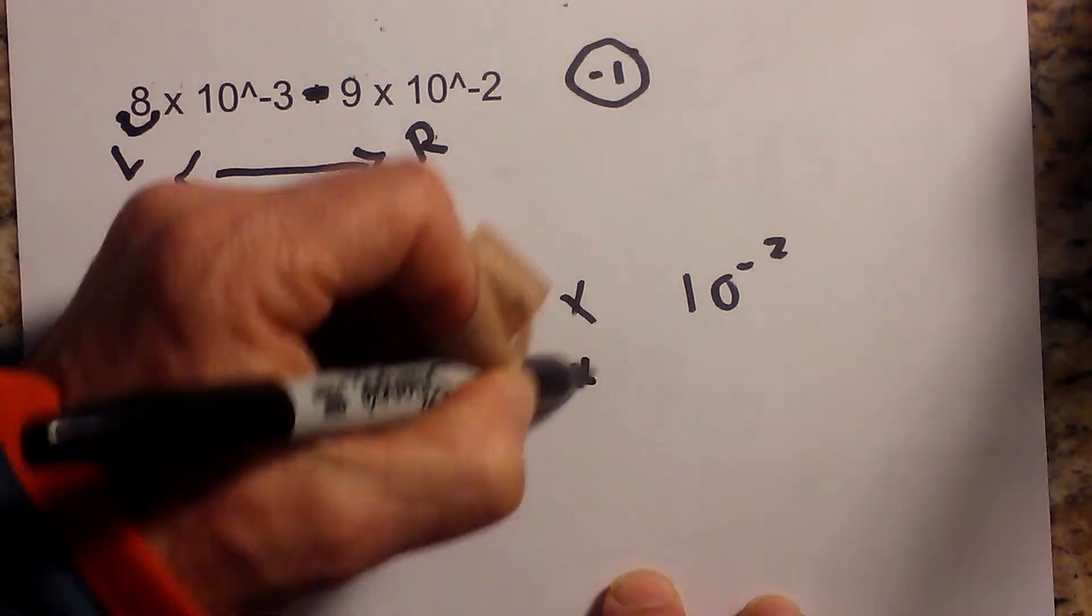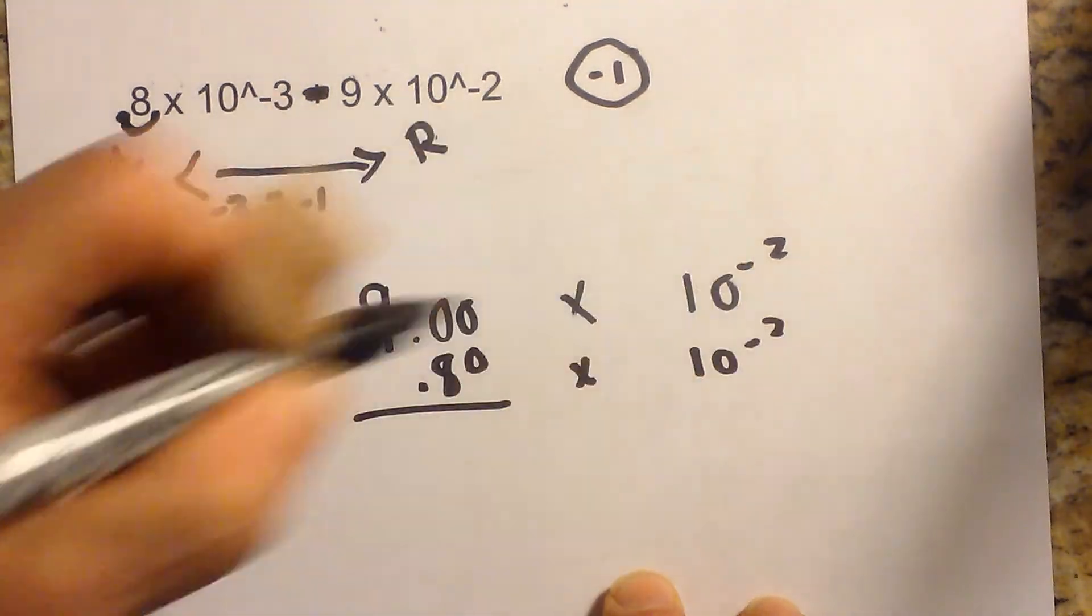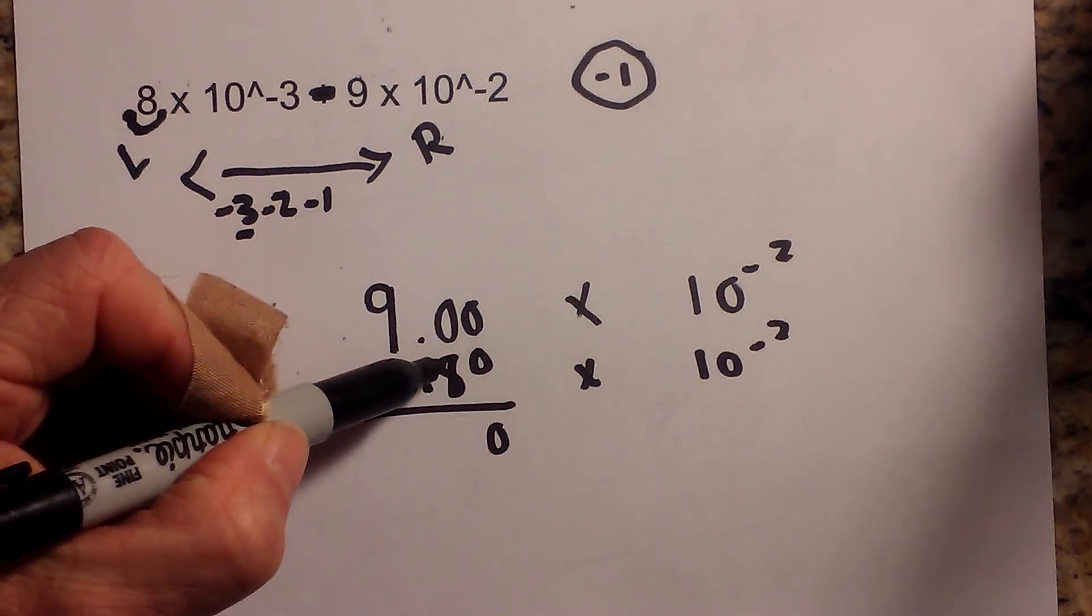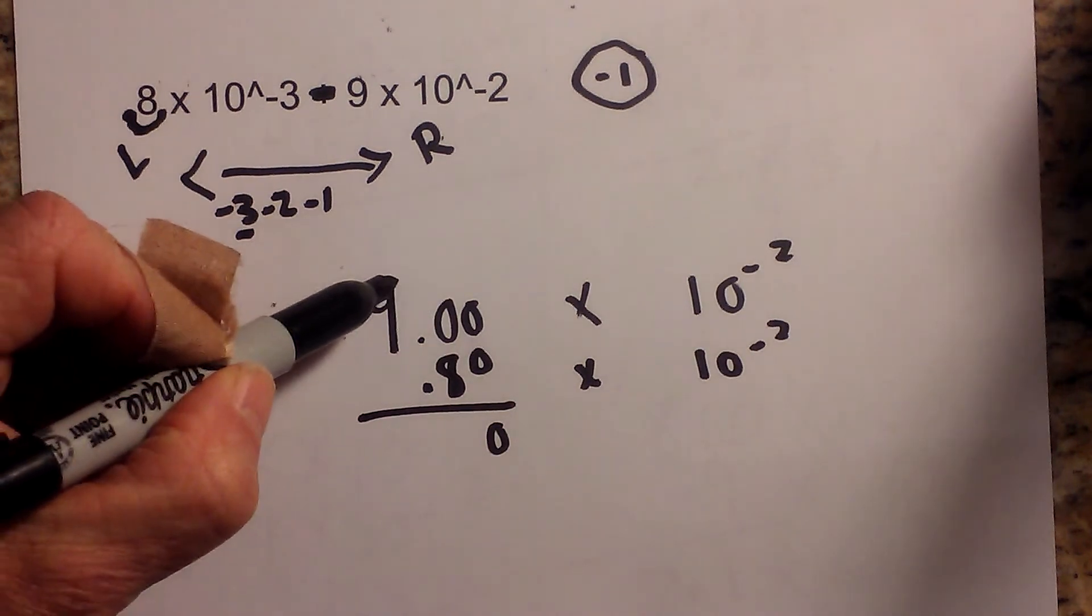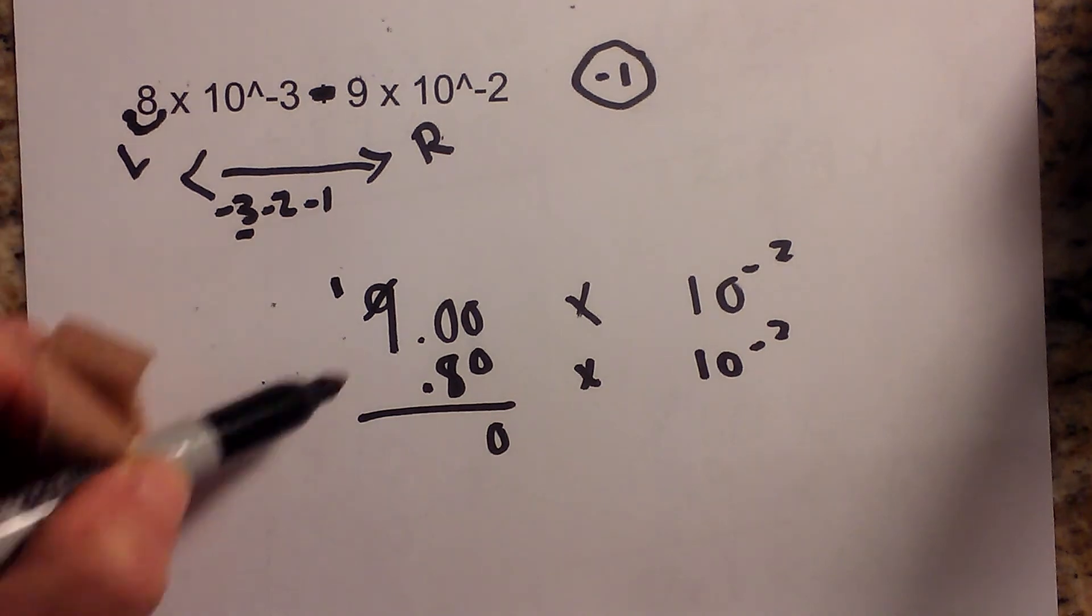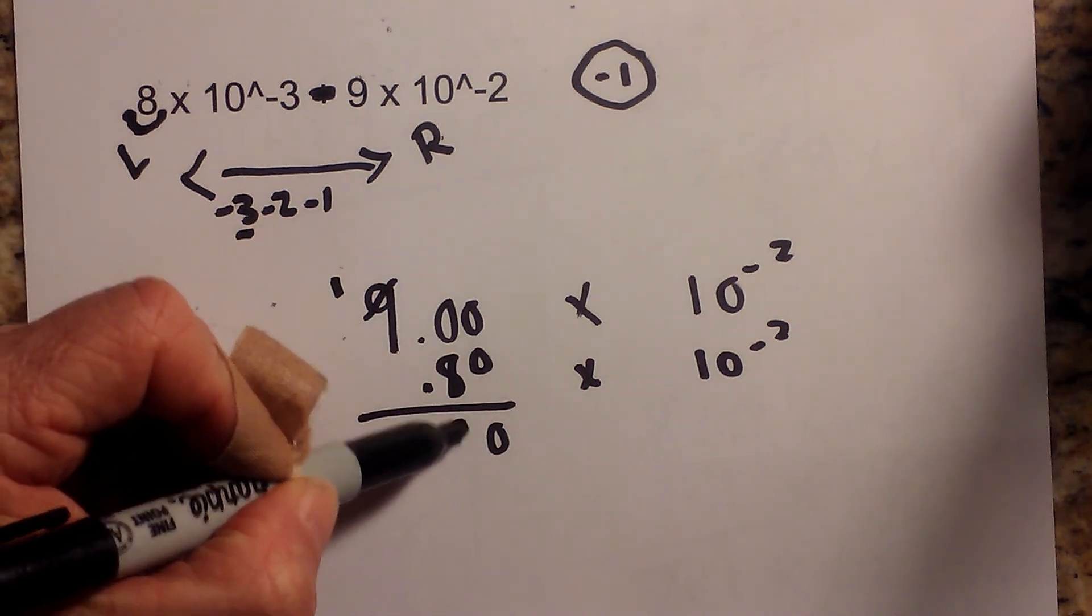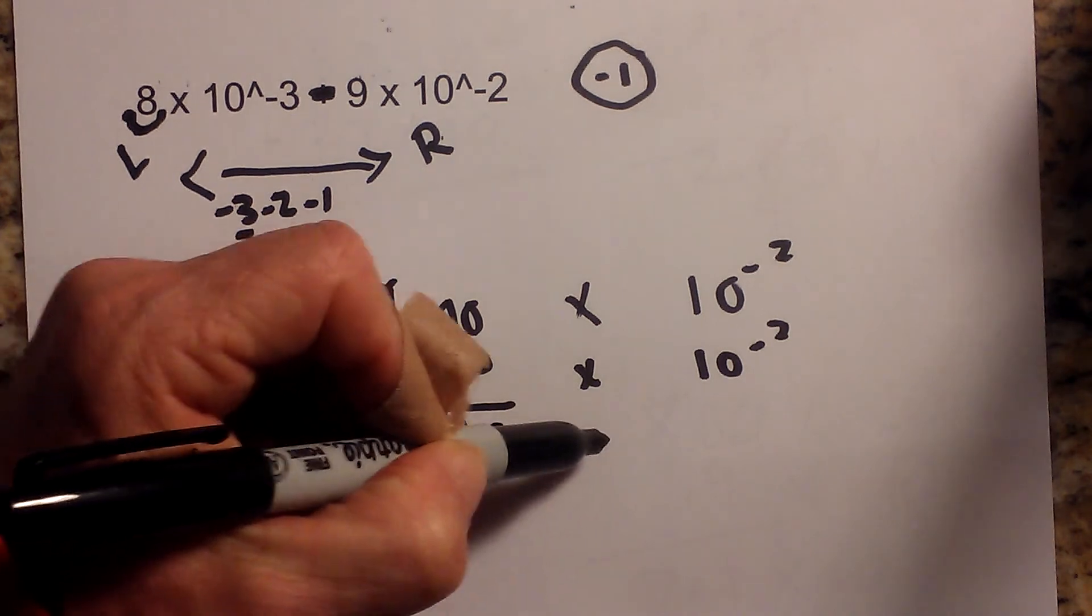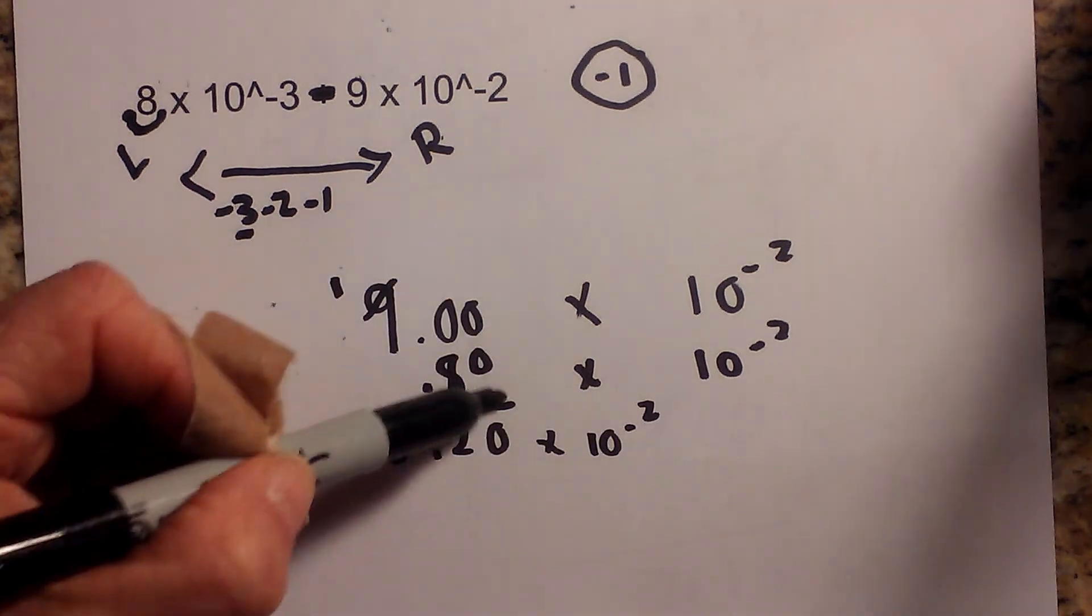Okay, and then what I do now is just subtract. And so that's 0, 0, I need to borrow 1 from the 9. So this becomes a 10, so this will be 8.20 times 10 to the negative 2nd.